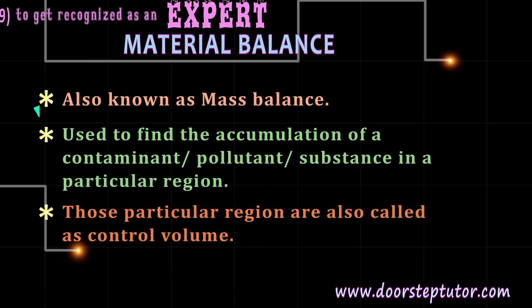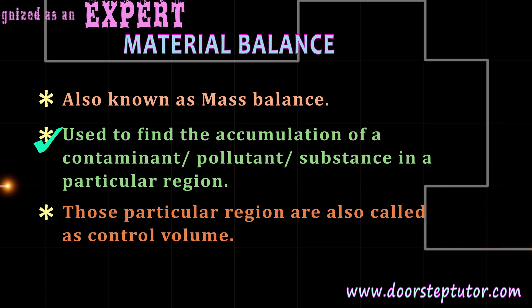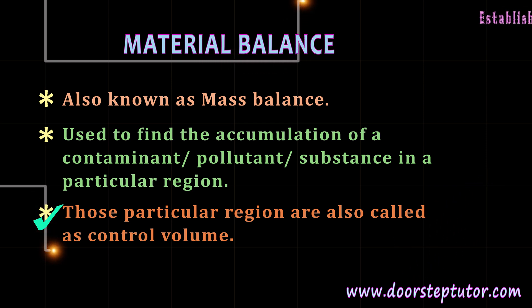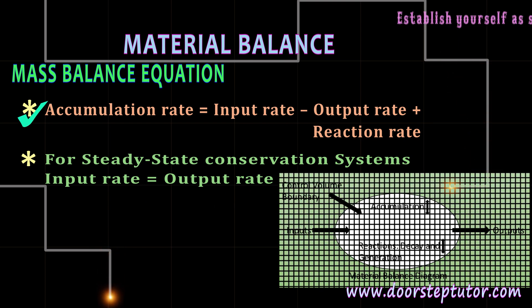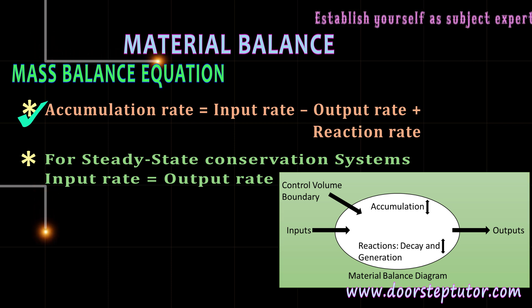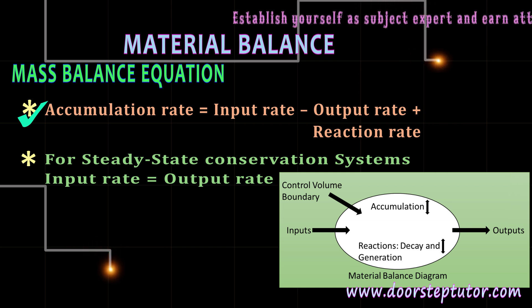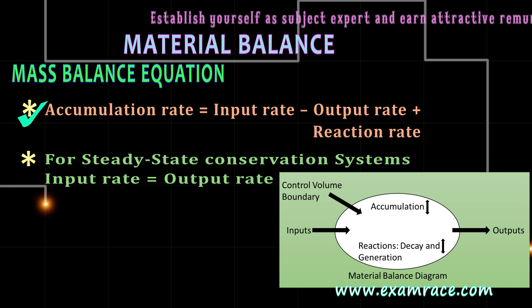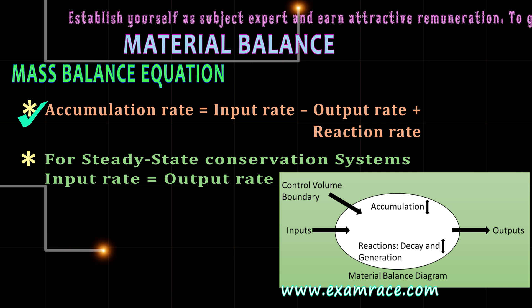Material balance, also known as mass balance, is used to find the accumulation of a contaminant, pollutant, or substance in a particular region, called the control volume. The mass balance equation is: accumulation rate equals input rate minus output rate plus reaction rate. The accumulation rate is the amount of contaminant that stays in the system, input rate is the input of contaminant into the system, output rate is the output out of the system, and reaction rate is the amount of contaminant that has undergone changes.